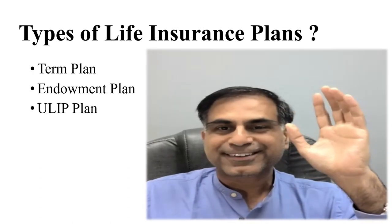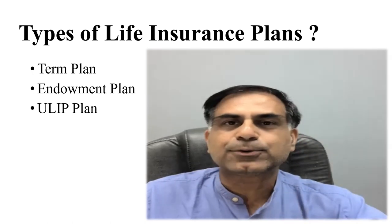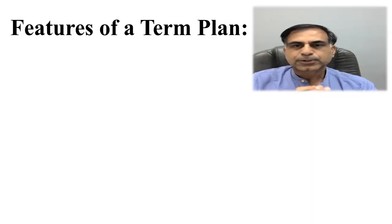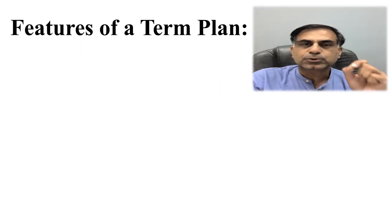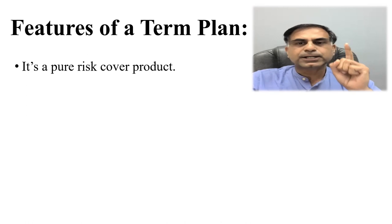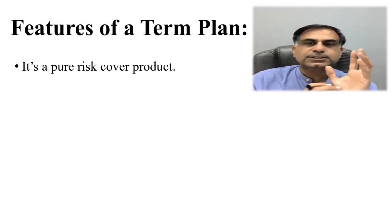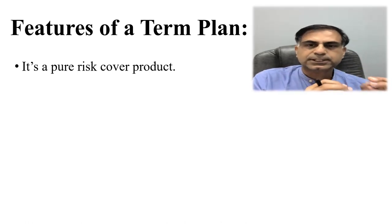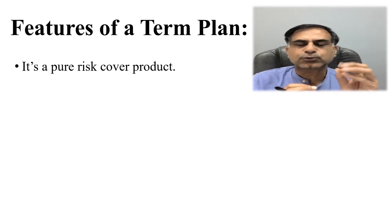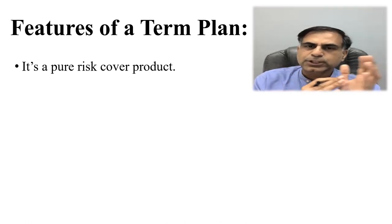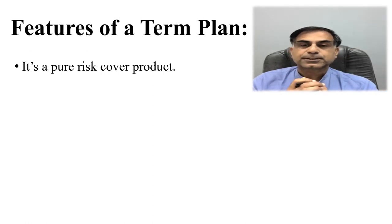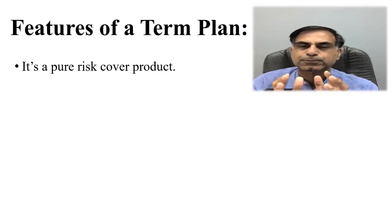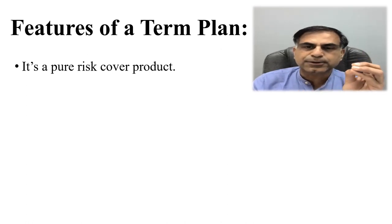The key feature of today's video is the term plan, which I'll describe in detail. A term plan is a pure risk cover product. At an age of 25 years, a person can take a term insurance plan of rupees 1 crore — a very big amount — with a premium of just 15,000 rupees. Compare this with a new car worth 10 to 12 lakh rupees, whose insurance premium may range between 30 to 35 thousand rupees.